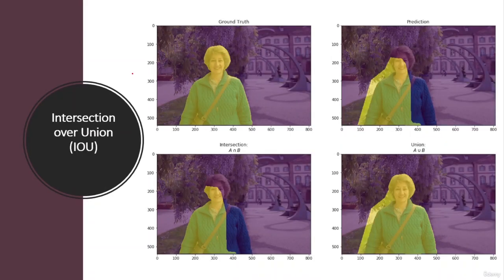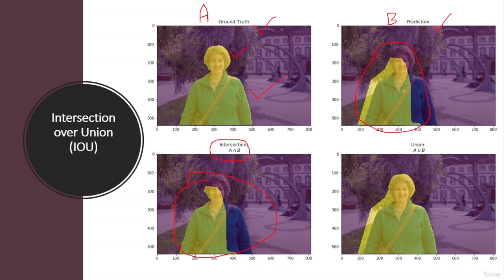Consider this example to understand the concept of intersection over union more clearly. The first image is the ground truth image showing a woman, and the second image is the predicted image showing the predicted number of pixels for the woman as predicted by the model. Let's say the ground truth pixels of the woman are represented by A, and the pixels predicted by the model are B. In the third image you can see A intersection B, which contains only the common pixels between the ground truth and predicted mask. In the fourth image you can see A union B, which consists of all the pixels of the ground truth and the predicted pixels.